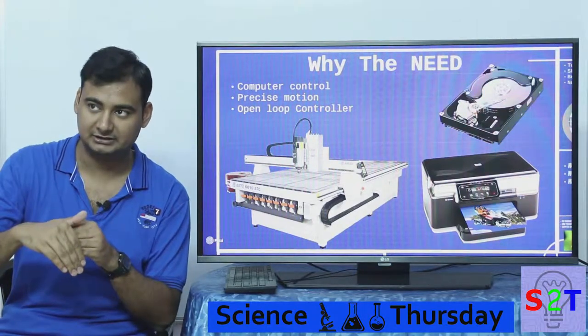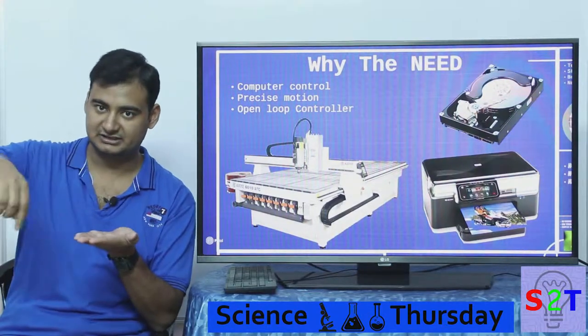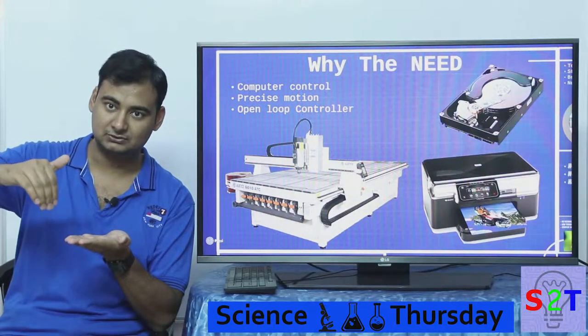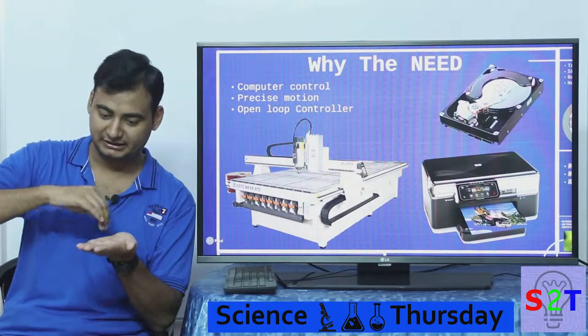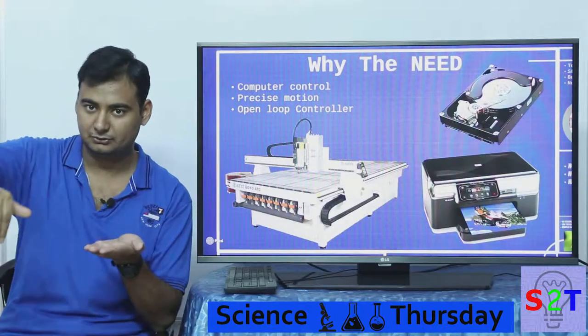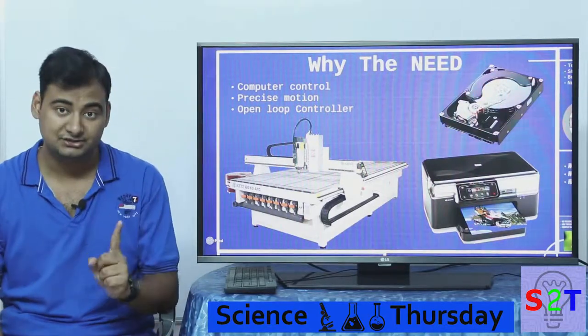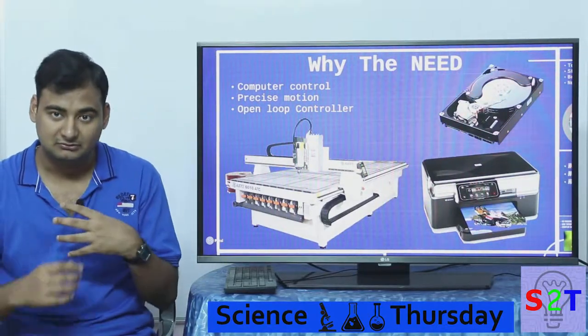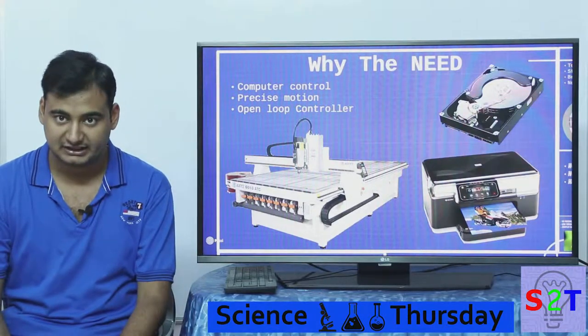Otherwise it does not know when to give off the ink. Like let's say there is a blue circle, so it has to be like off, off, off, print blue, off, off, print blue. Then again like that it has to keep doing it. For this reason we need precision and we can achieve this by many other methods like servo methods.